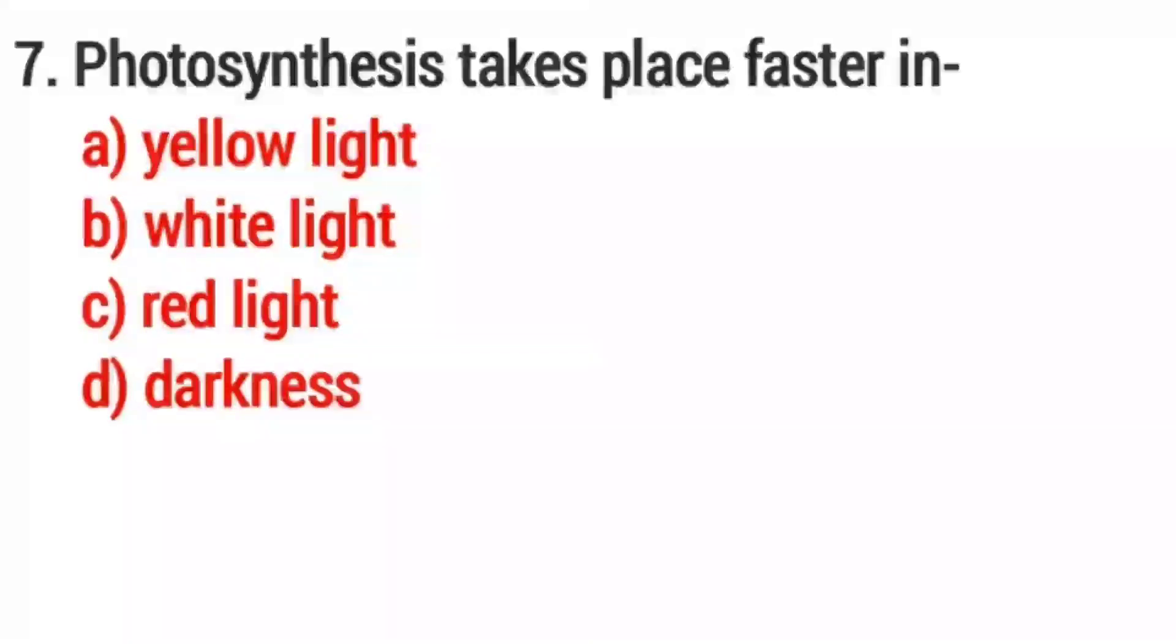7. Photosynthesis takes place faster in? Option D. White light.